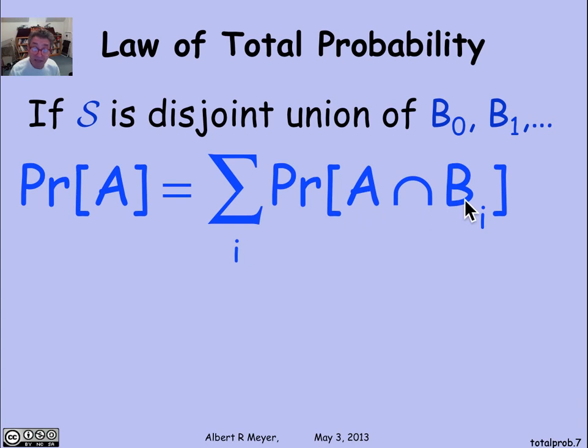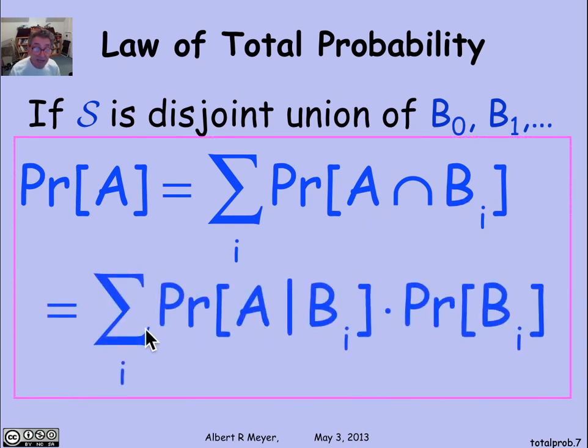And reformulating that as a conditional probability, I get the rule that the probability of A is the sum over all possible I of the probability of A given BI times the probability of BI.